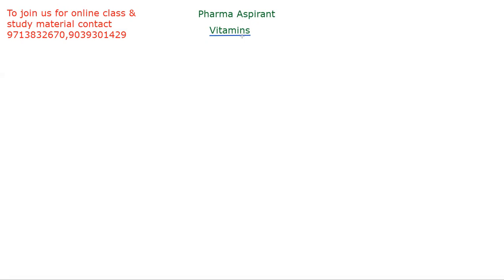Starting with a simple introduction: vitamins are a kind of organic compound. They are made up of carbons. In our biological activities, vitamins are required in very small quantity. If we talk about carbohydrates, we require them in large quantity, but vitamins are required in the diet in only small quantity.